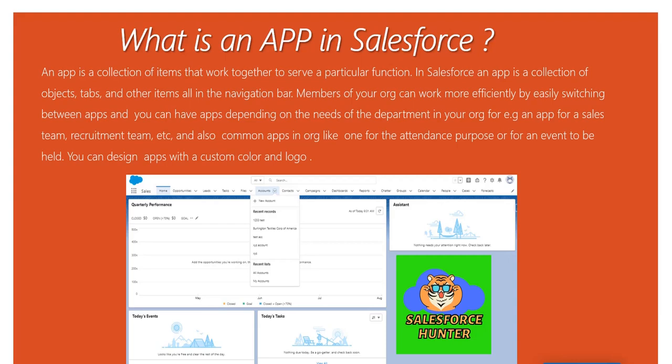You can have different apps for different purposes, depending on the needs of departments in your org. For example, an app for the sales team or a recruitment team. You could also have common apps in your org, like one for tracking employee attendance or for an event held by your organization. You can also design apps with a custom color and logo.